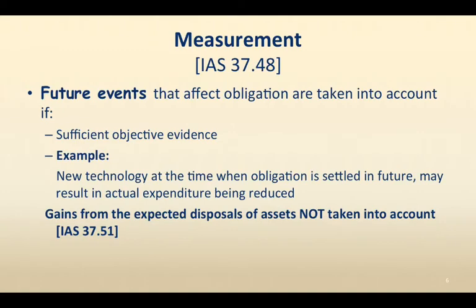Future events that affect obligations are taken into account if there is sufficient objective evidence. For example, new technology at the time when the obligation is settled in the future may result in actual expenditure being reduced. Gains from expected disposals of assets are not taken into account. When you have a provision, you take into account future events such as new technology reducing actual expenditures, and you factor this into the measurement of the provision.